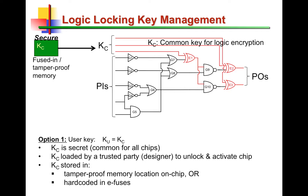After we insert the key gates and produce a correct key that makes the design operational, one way is to use the same key — which we call KC, or the common key — for all chips manufactured based on a certain logic lock design. This KC needs to be loaded on a secure tamper-proof memory, or it could be hard-coded in terms of E-fuses, but this must be done by a trusted party — in this case, the designer themselves, since KC is the designer's secret. Once KC is loaded on the tamper-proof memory or hard-coded, the chip is unlocked, activated, and becomes operational.